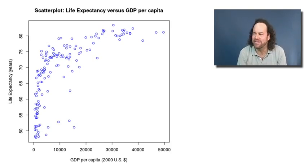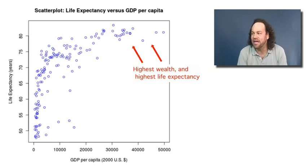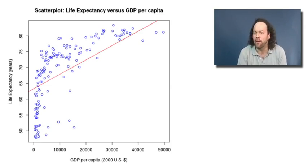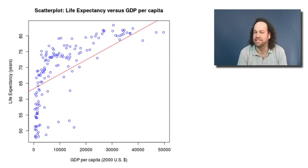Now if we look at it, it looks like just a collection of dots. But we can start to see some patterns — it does look like the countries with the highest wealth, the highest GDP per capita, also tend to have the highest life expectancy. We'll learn later how to fit a line of best fit through a plot like this. And if we put the line of best fit in, we can see that it's moving upwards to the right, which is an illustration of the positive relationship between these two variables — the higher the wealth gets, the higher the life expectancy gets too.